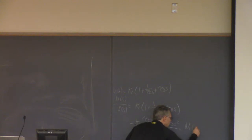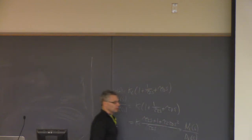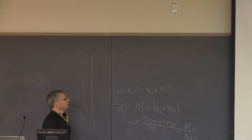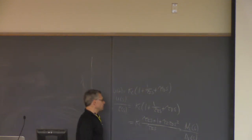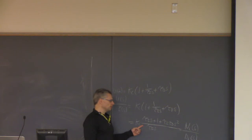This is a polynomial in S over a denominator polynomial in S, and I put the subscript C to represent controller. If the transfer function of the controller looks like this, or can be arranged to look like this, it's a PID controller.